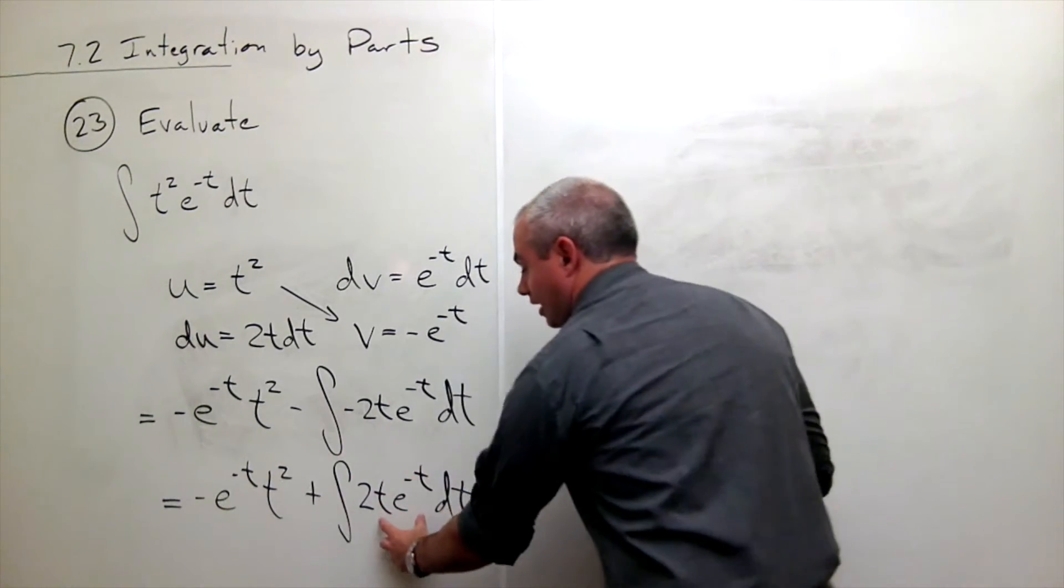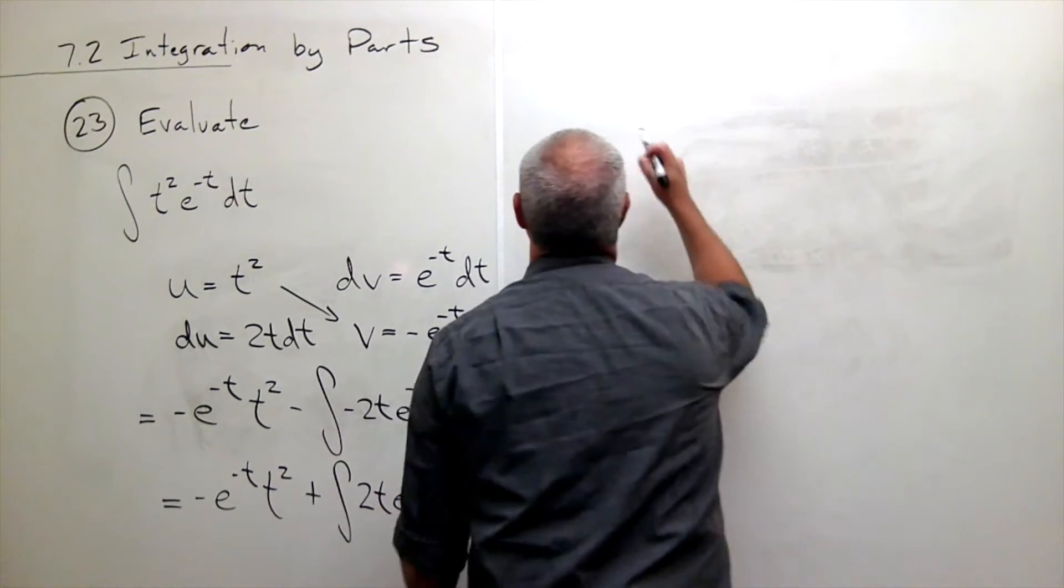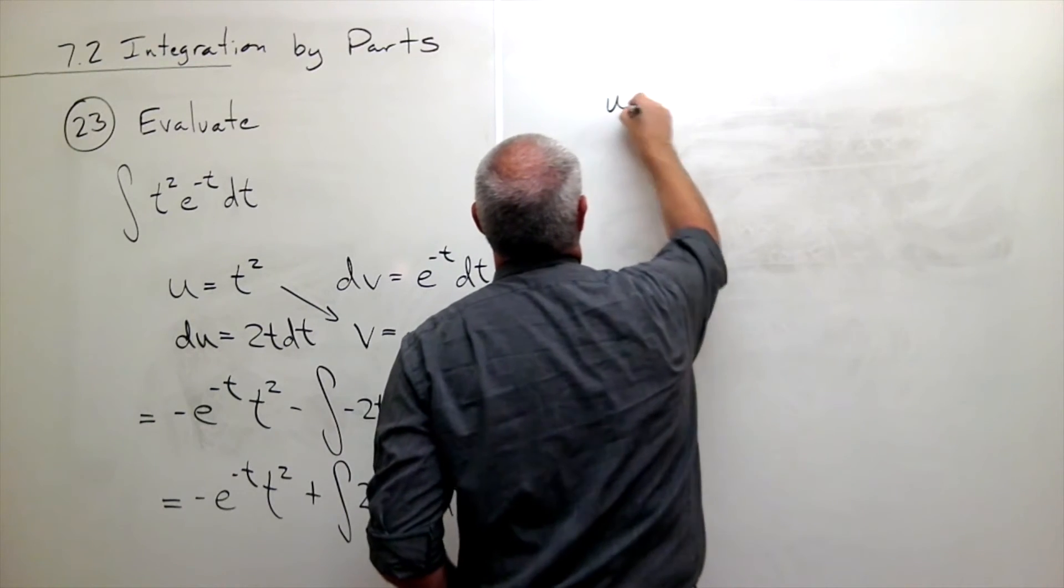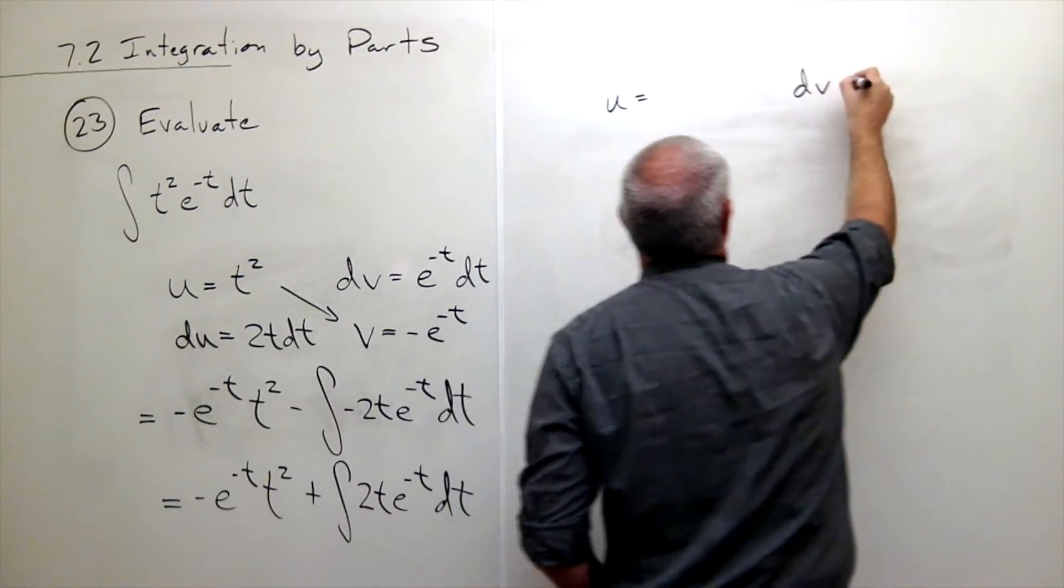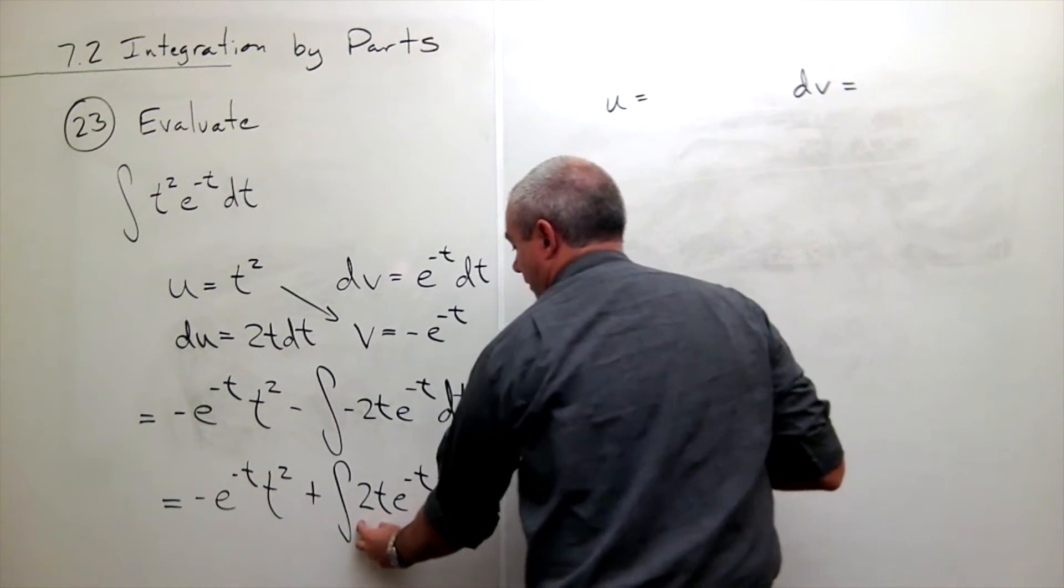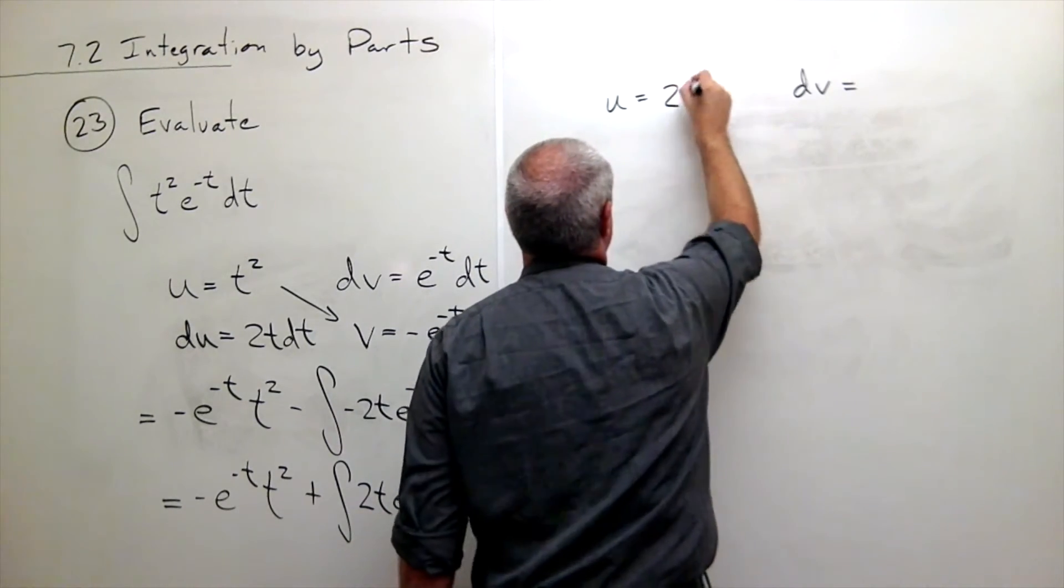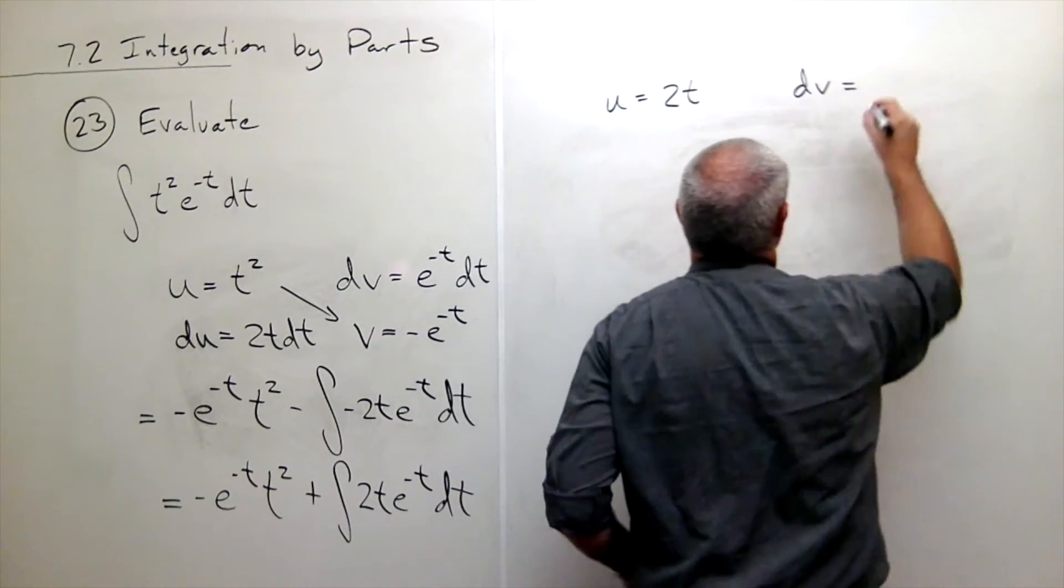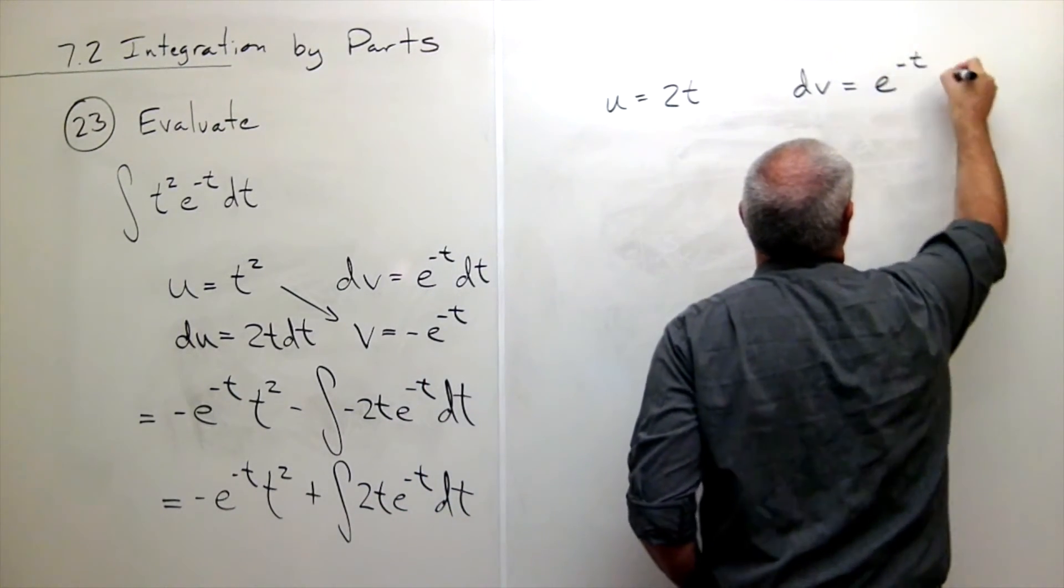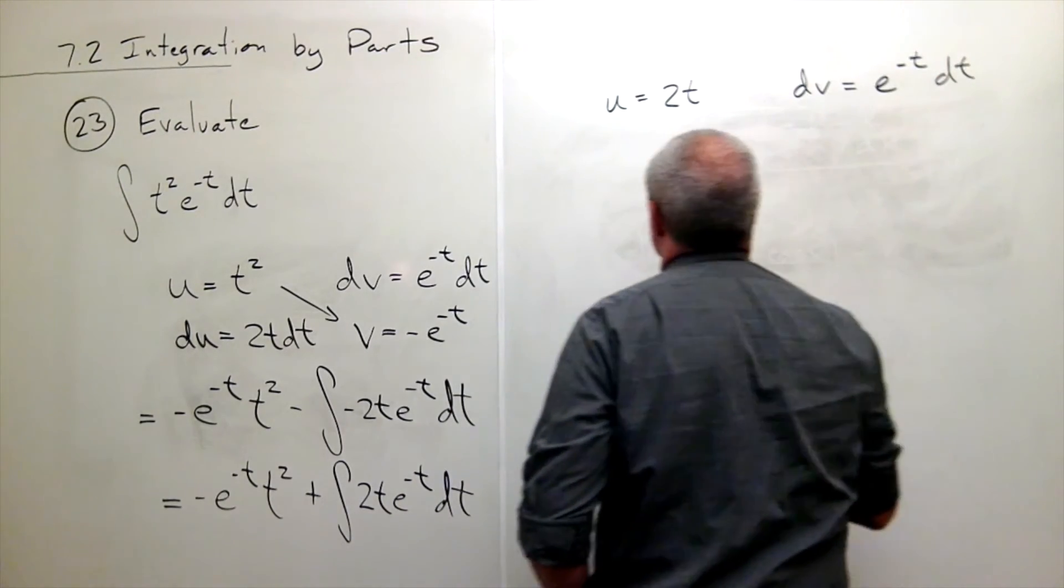So I'm going to do the same thing again on this guy. I'll divide this up using a u and a dv. And this time my u will be 2t because I'm still trying to make things more simple. And then I've got an e to the minus t dt as my dv.